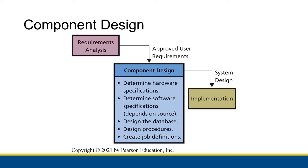Security procedures are also part of designing the procedures. And then you will design the people side of the information system by defining what jobs the people who interact with the system will have. You define this is the position that needs to work with this part of the information system, here are the responsibilities they will have, and here is the experience they will need in order to effectively do this job. You'll define all of these different jobs for every piece of the information system where a person is needed.